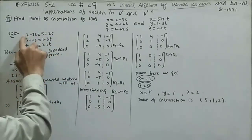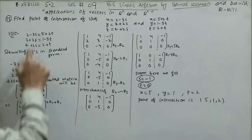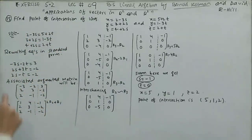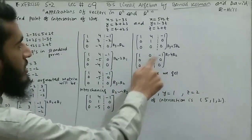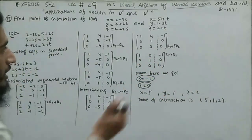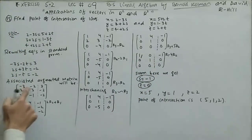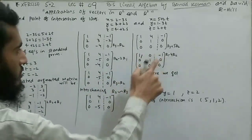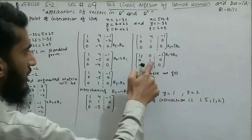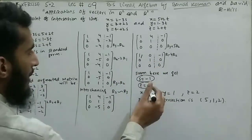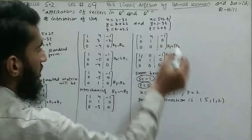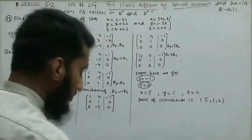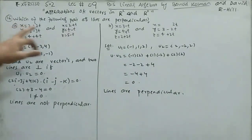Rewriting the system in standard form and forming the augmented matrix gives [[-3, -2 | 2], [2, 3 | -2], [2, -1 | 0]]. After row operations the reduced form is [[1, 0 | -1], [0, 1 | 0], [0, 0 | 0]], giving s = -1 and t = 0. Substituting back: x = 5, y = 1, z = 2, so the point of intersection is (5, 1, 2).